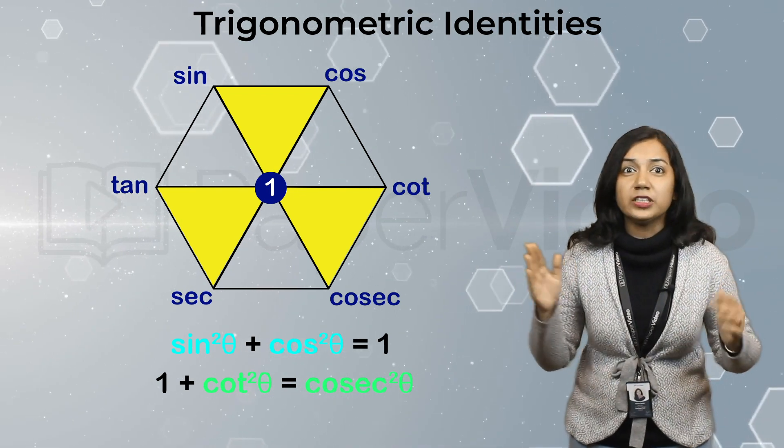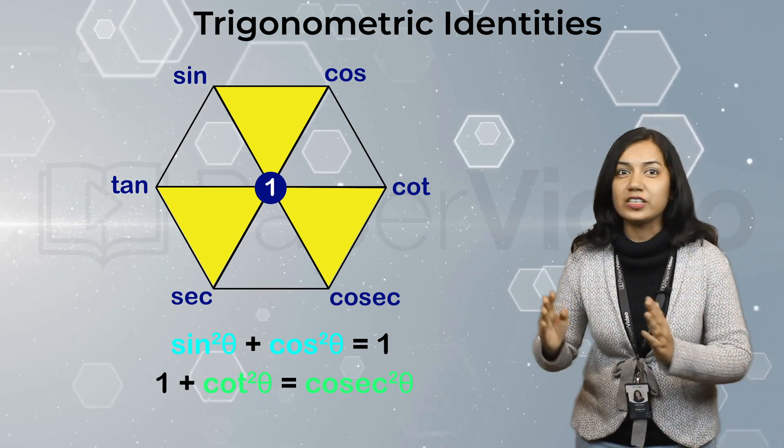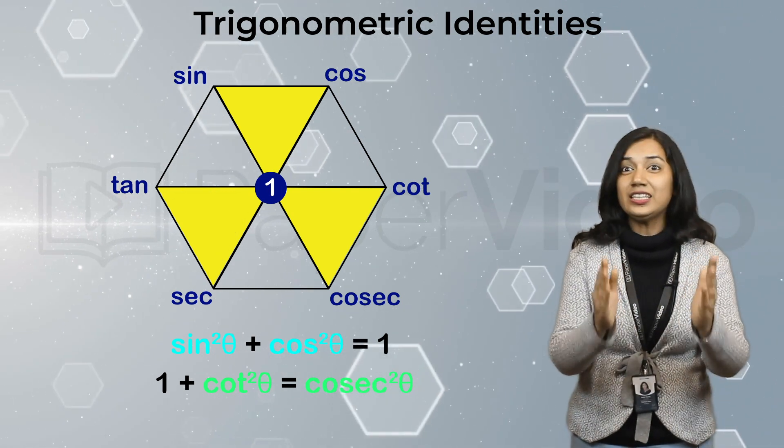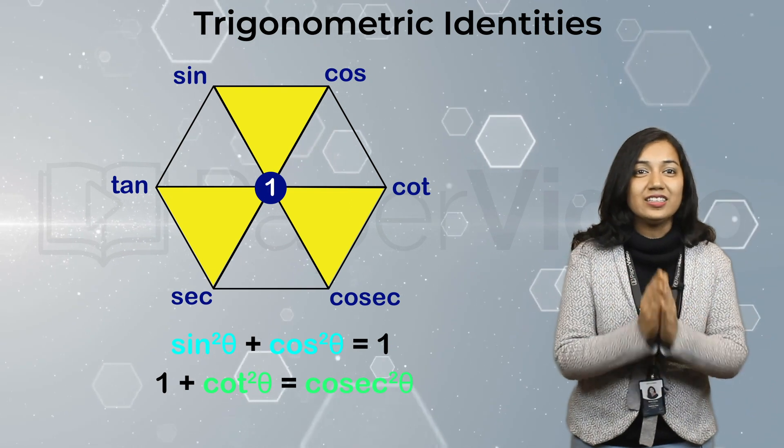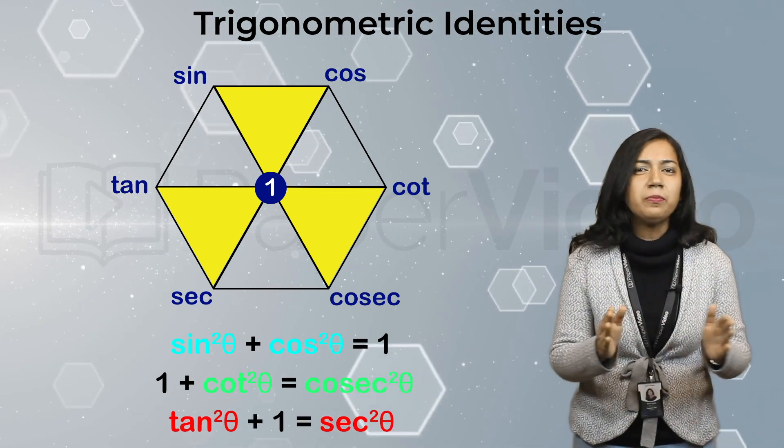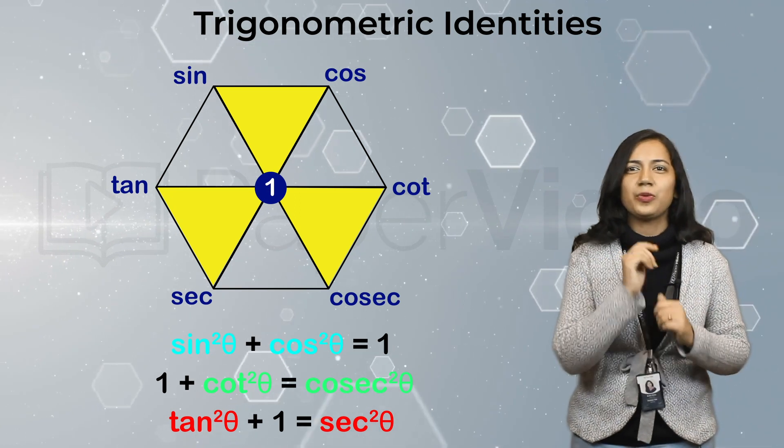And now, from the third triangle, going in clockwise direction, we get tan, 1 and sec. Squaring these three in order, we can write the third trigonometric identity as tan square theta plus 1 equals sec square theta.